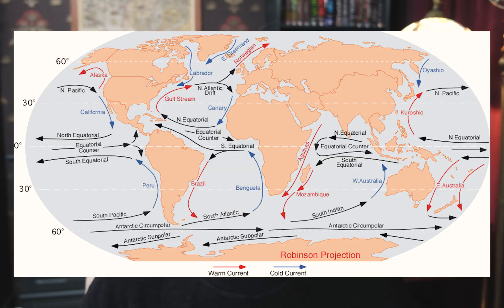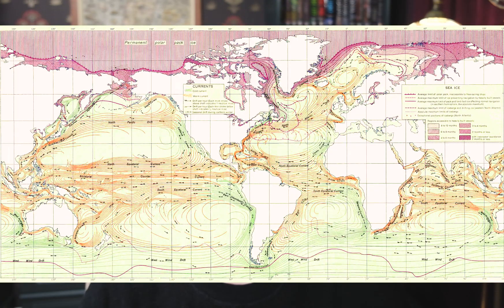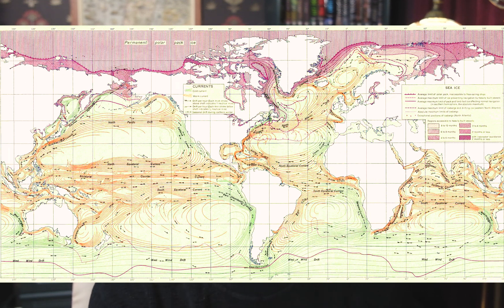The major wind belts we've already mapped out are going to carry and push the surface water currents along the same path as them, and they will keep moving in these directions until they hit land. At that point they will split north and south, travel up the coast until they run into another major wind belt which will carry them the other way. The cycle will repeat, and they will continue in these large circular ocean currents called gyres. If land masses don't break up these currents, they will just keep traveling around the globe.